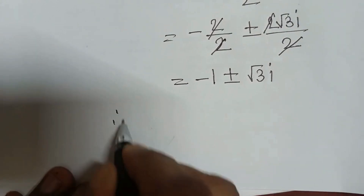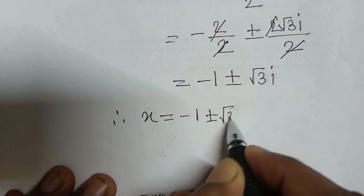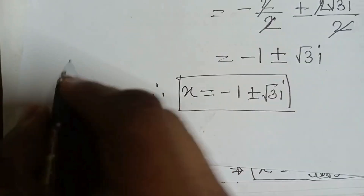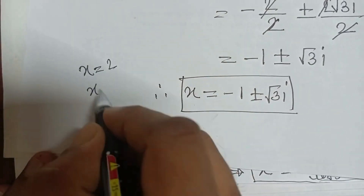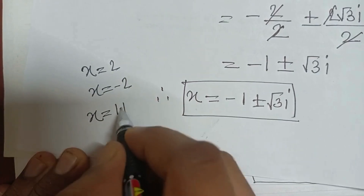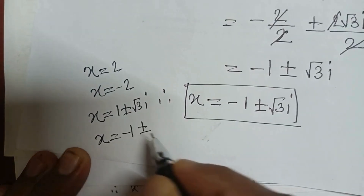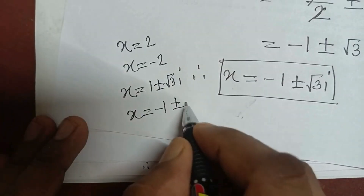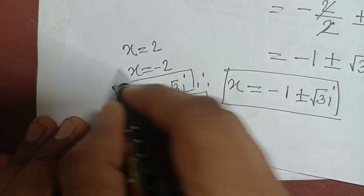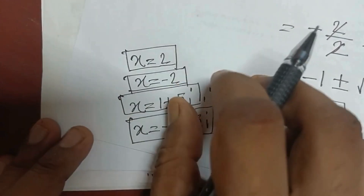Hence we get another complex solution: x equals minus 1 plus or minus root 3 i. So the four solutions we obtained from x to the power 6 equals 2 to the power 6 are: x equals 2, x equals minus 2, x equals 1 plus or minus root 3 i, and x equals minus 1 plus or minus root 3 i.